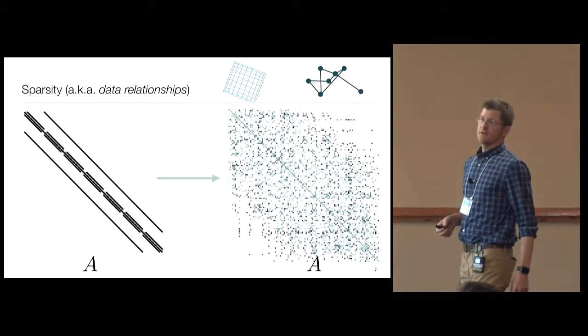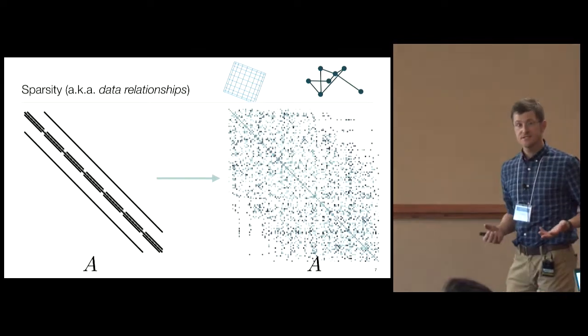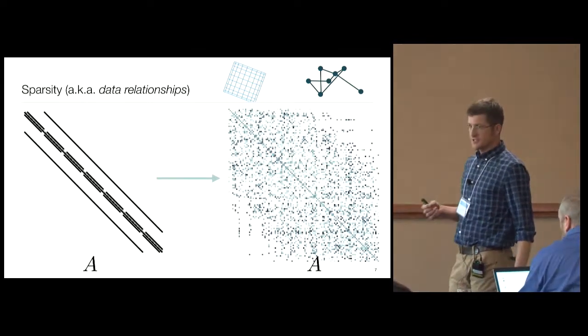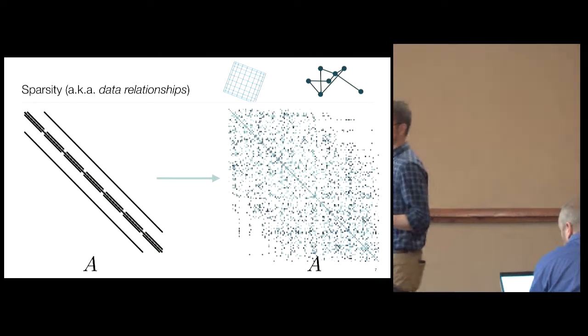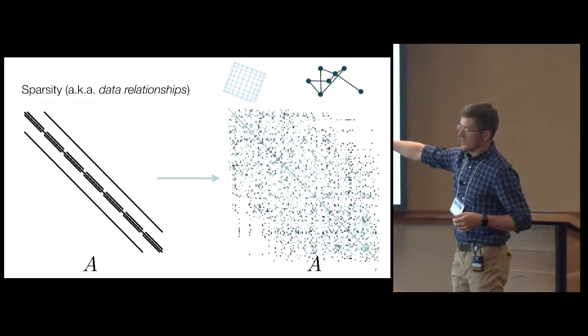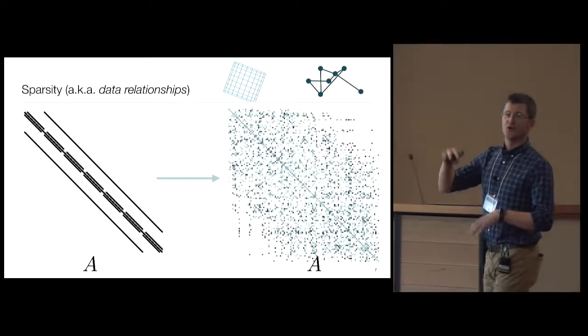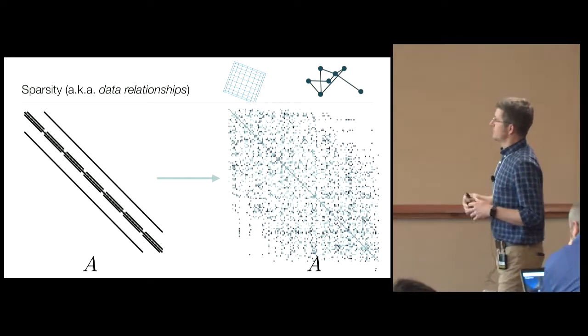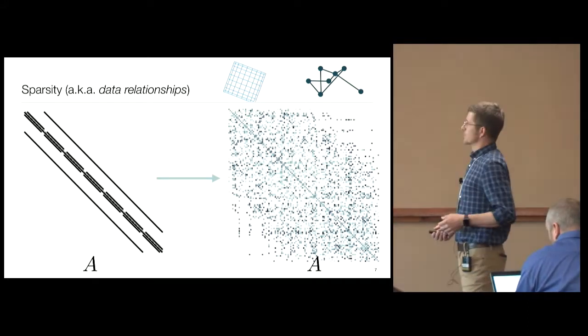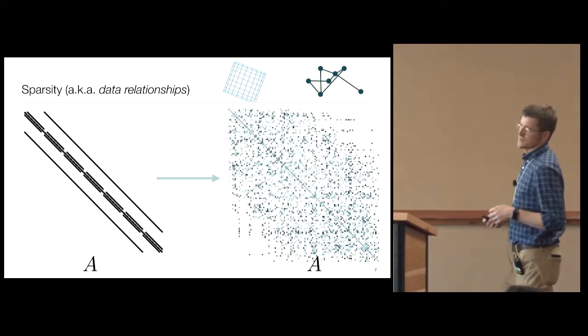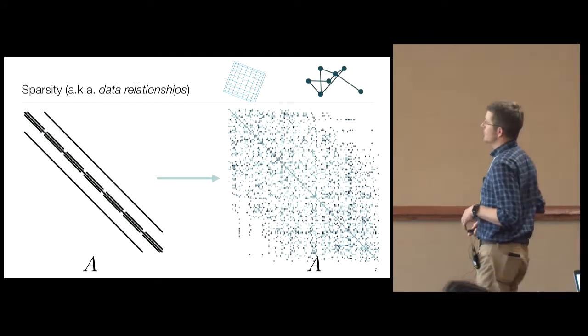So we have a matrix A, and it's sparse. A sparse matrix is just a data relationship. It says two things are connected, and that can be very structured, which we have on the left, and that might be from a grid. Or it might come from unstructured grids or maybe from problems that don't even arise from grids, and that's a data relationship that we see on the right.